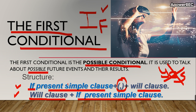So, you are just changing the order. Notice here: 'if' with simple present, comma, and the sentence with 'will'. Here: the sentence with 'will', and then 'if' with simple present tense. The only difference is that if you start your sentence using 'if', you need to write a comma. If you start your sentence using 'will', you don't write a comma. Notice? This is the difference.